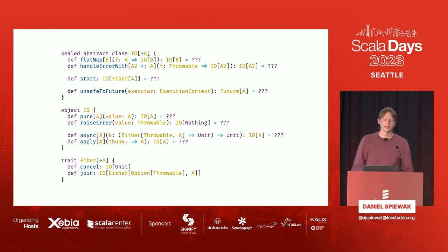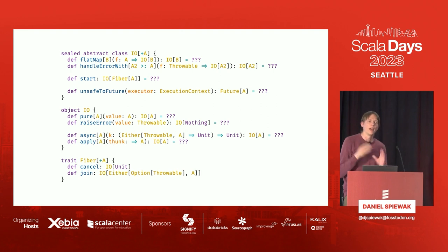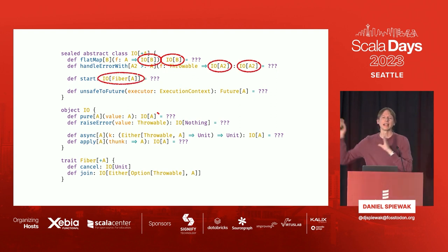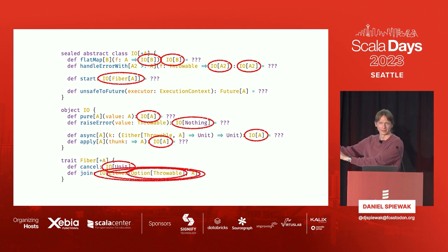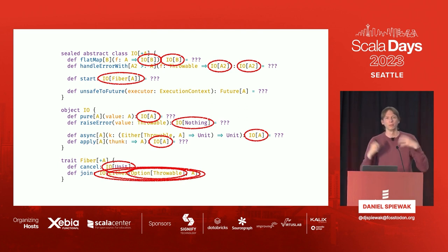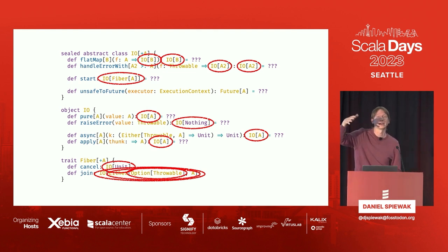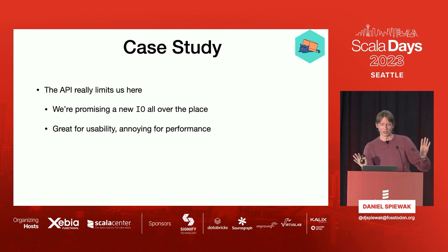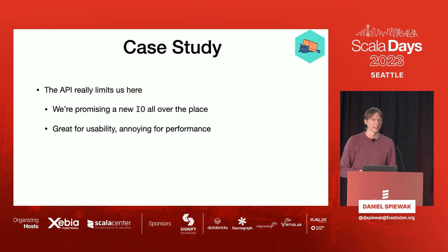This is what we're going to be implementing — the code for the IO Monad. We've got flatMap, handleErrorWith, start, unsafeToFuture, and a couple of constructors. The very first thing to notice about this API is that there are a million and one allocations just in the API itself. You'll notice we're putting a lot of objects around here — IO of A, IO of B — which means we have to make an IO object. No amount of black magic is going to allow us to get rid of the IOs we have to wrap around our values. The API is super limiting — great for usability but really annoying for those of us writing the library.